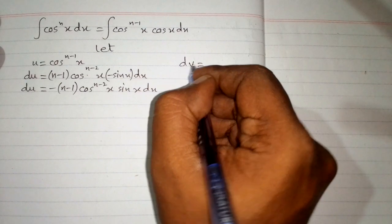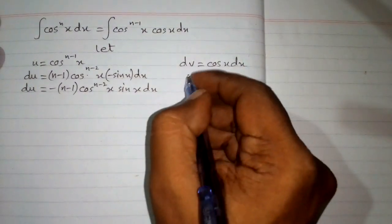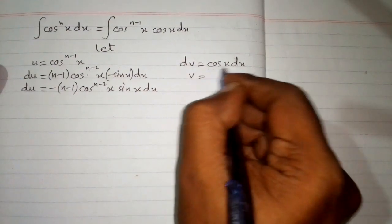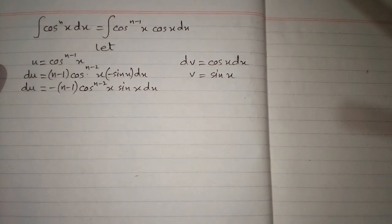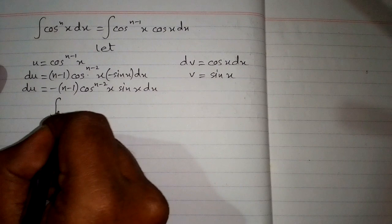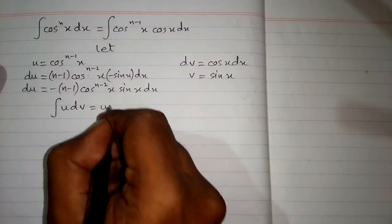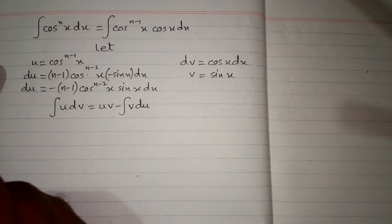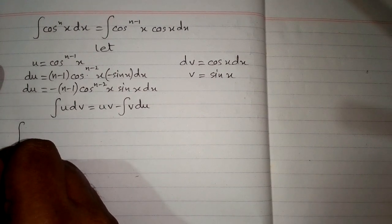For dv, we suppose dv is equal to cosine of x dx. Integrating both sides, v is equal to sine x. Now we will apply the formula of integration by parts, which is the integral of u dv equals u·v minus the integral of v du.